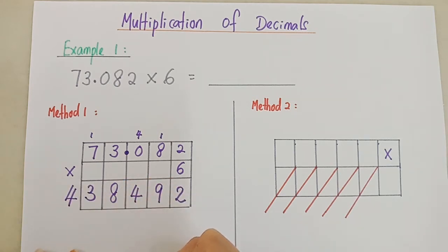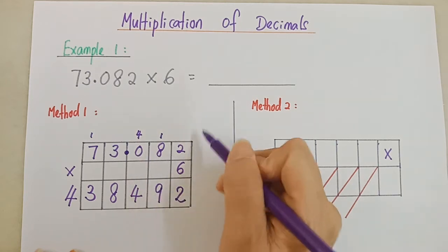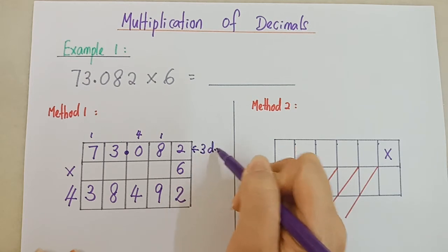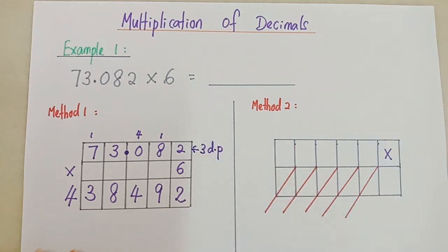And the last step, remember to put your decimal point. I count from the back: 1 decimal place, 2 decimal place, 3 decimal place. This is 3 decimal places, so the answer must be the same with this one, 3 decimal places.